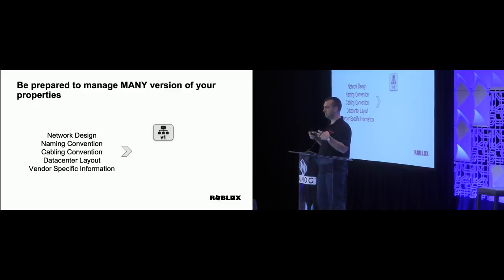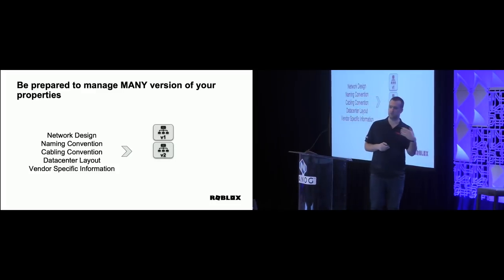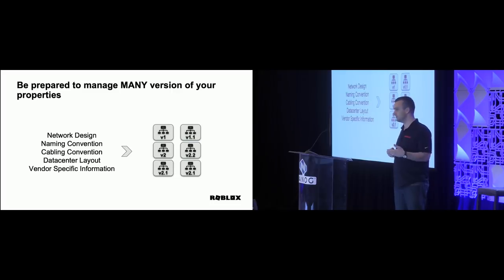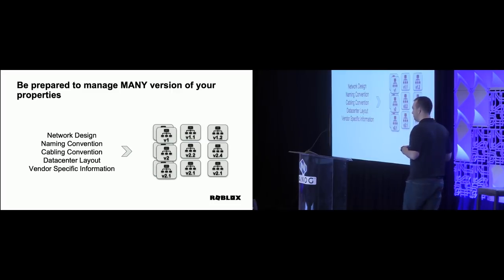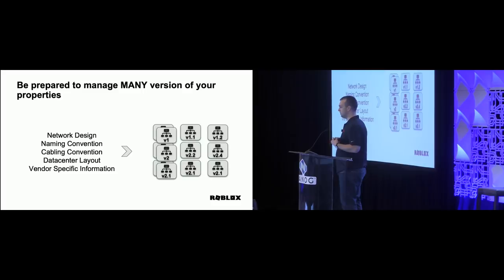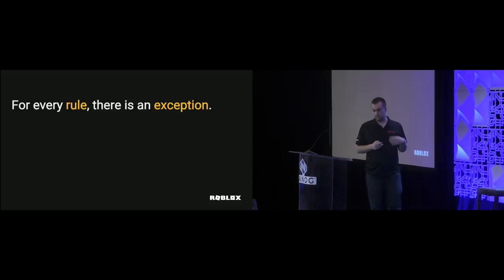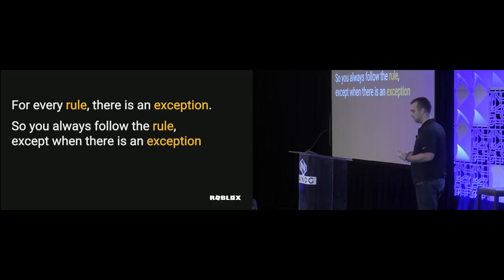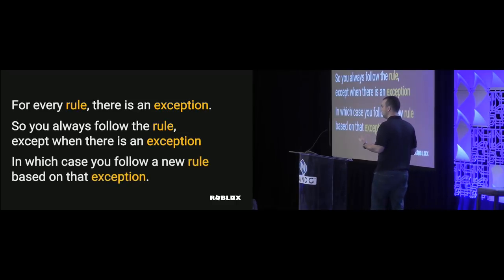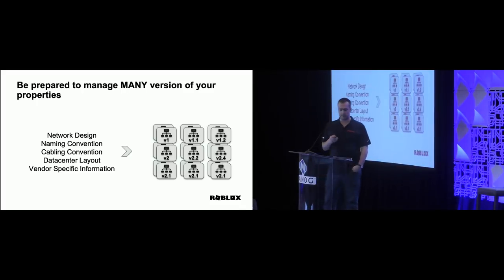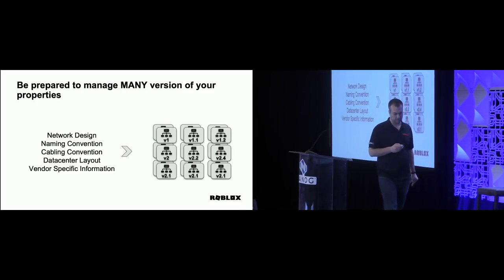Every time you try to define and put a standard, somebody comes and brings a new requirement. So you have to adapt. Then a vendor puts a device in an end-of-life state, and you have to create a new evolution and manage it. Every time you think you're done, something happens and you have to manage for that. My message here is: you really need to prepare to have many, many versions of your device properties. For every rule, there is an exception. You follow the rule, except when you follow the exception — which just created a new rule based on that exception. There are business reasons you will never be able to push back on. So be prepared to have many versions of your properties.